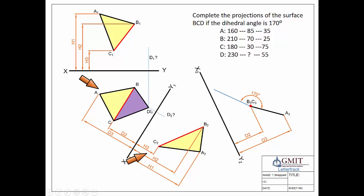Knowing from the question that the dihedral angle is 170 degrees, we're able to mark in the edge view of that surface — C, B and D. We don't know where it stops yet, but applying our 1-2 rule — going back one view, two views — we actually do have that distance. That distance can be transferred across to this view, drawing a line parallel with X2Y2 to locate point D in the second auxiliary. So we're able to tie our views together to locate our missing point.